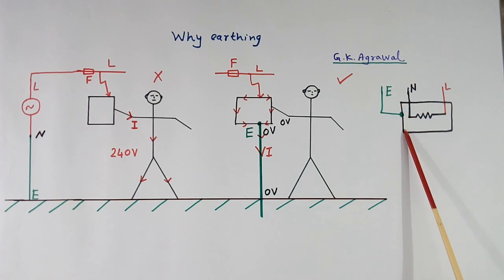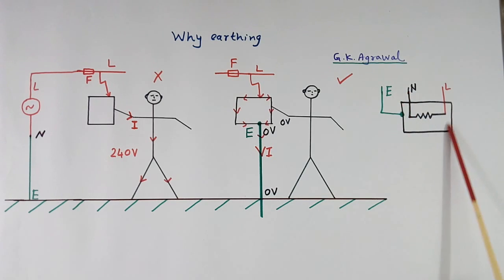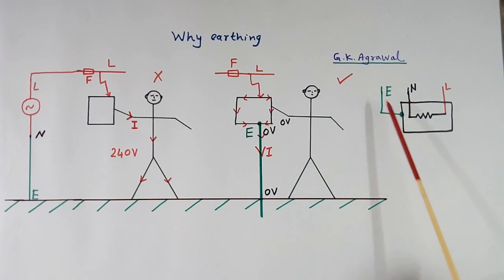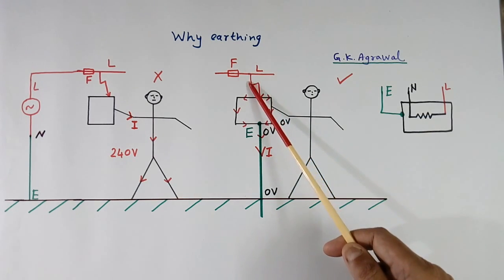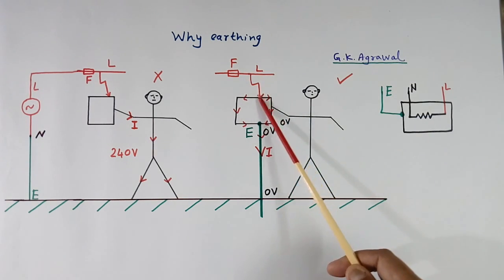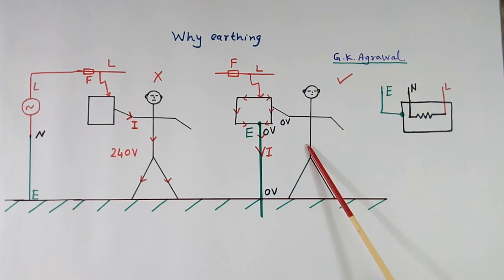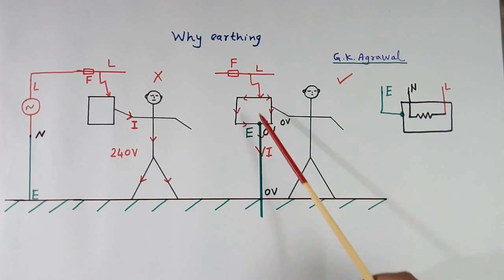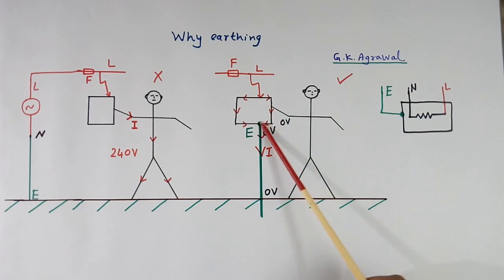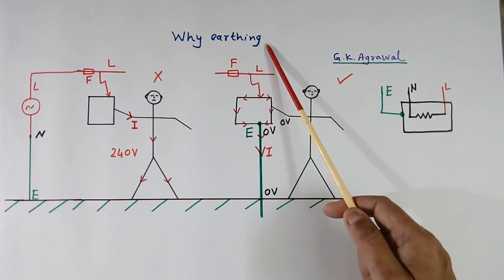Now here the same equipment is shown, but the load is connected across line and neutral, and the body is connected to earth and is grounded. If a fault comes, then current will flow through the earth path — no current will go through our body. So we will be safe, there will not be any shock, and this voltage will be zero. Because of shorting, heavy current will flow, so the fuse will also blow. The main purpose of earthing is safety.